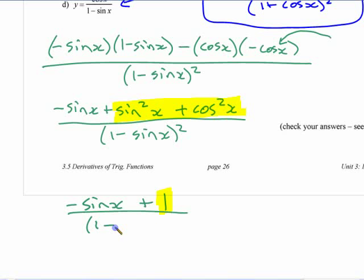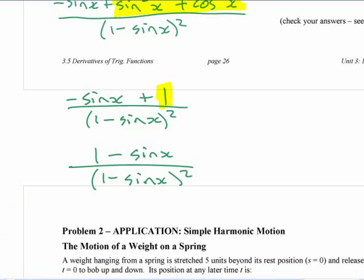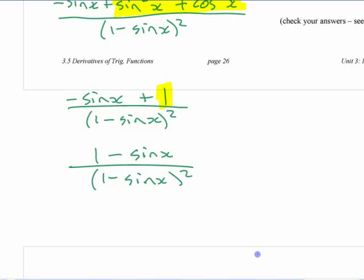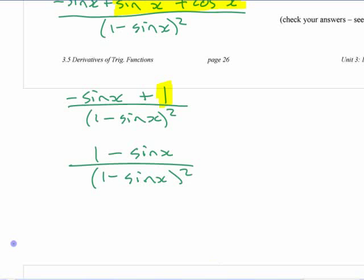Yes, you could. If you prefer to see it as instead of minus sine x plus 1, if you want to make it 1 minus sine x over 1 minus sine x. Don't do crazy stuff here like canceling things that shouldn't be canceled. Don't do this, right? You can't do that. But what you can do is see that the entire thing can be canceled. One of the factors on top, this is the same as 1 over 1 minus sine x.